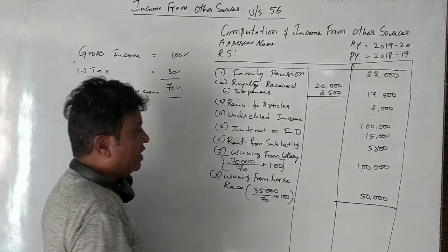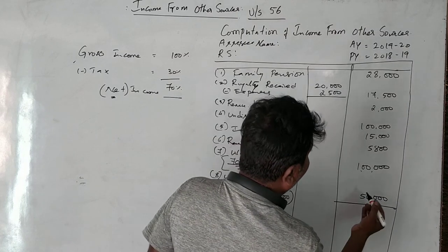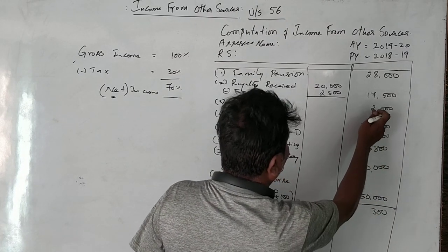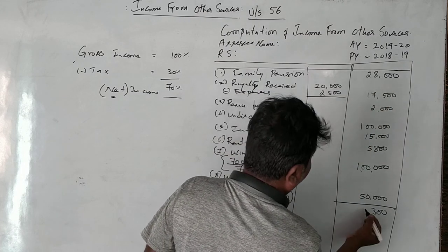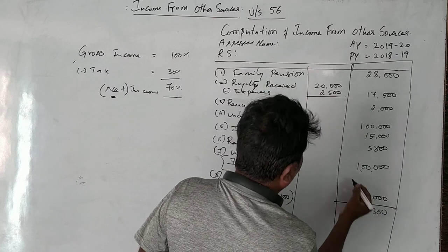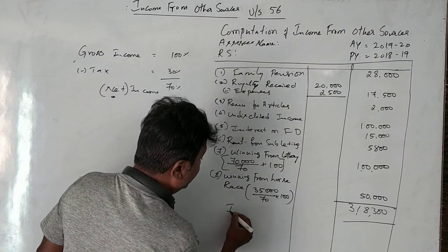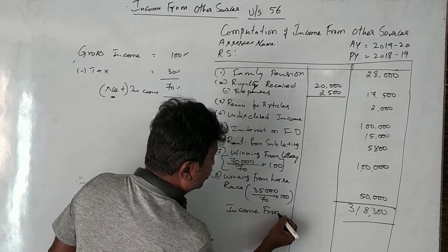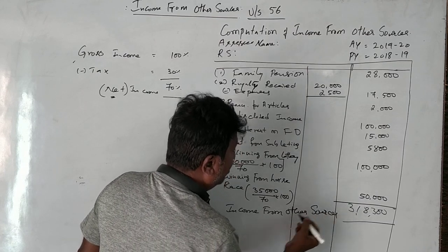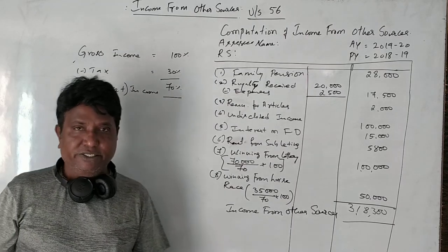That covers all the points. We now calculate income from other sources: the total comes to 3,18,300 rupees as income from other sources. This is the second question, for six marks.